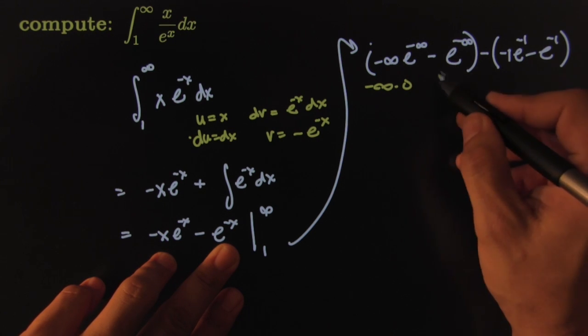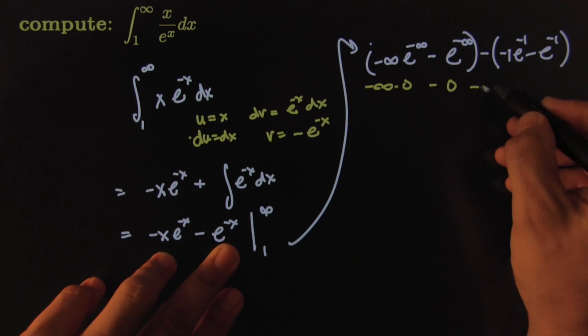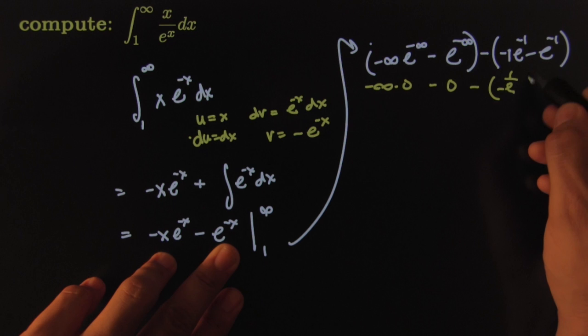This is an indeterminate form. So I'm going to have to come back to this one and try to resolve it. And this piece right here becomes 0, minus this piece becomes negative 1 over e. And this becomes negative 1 over e.